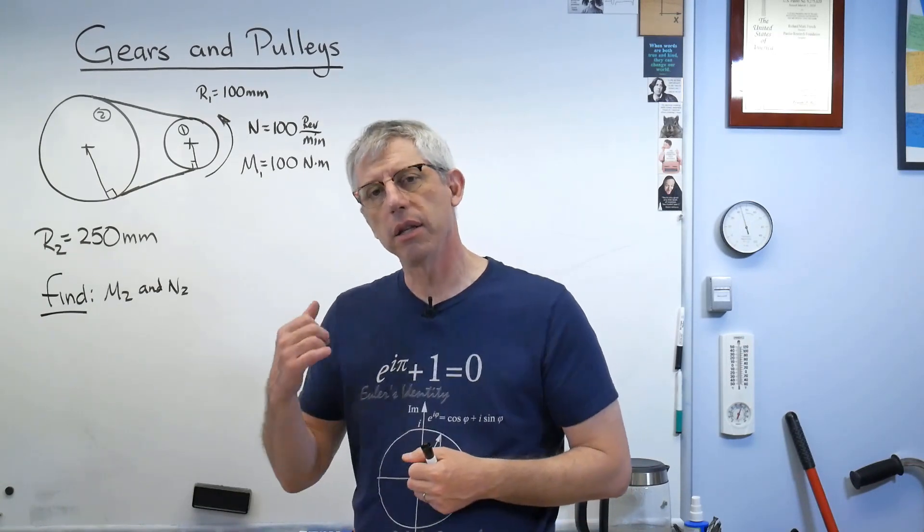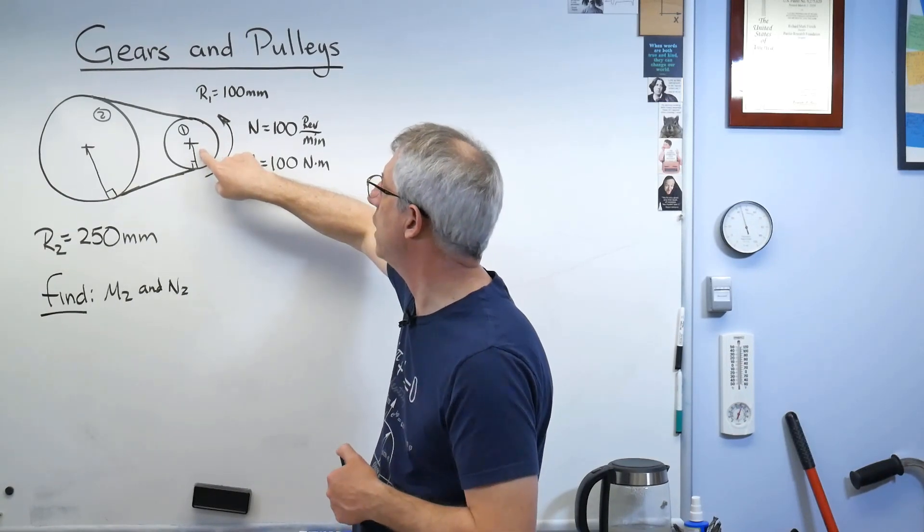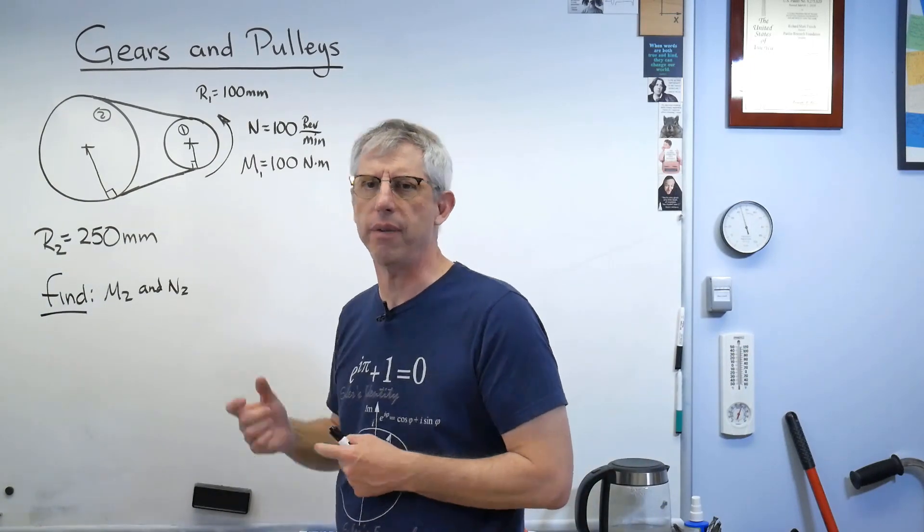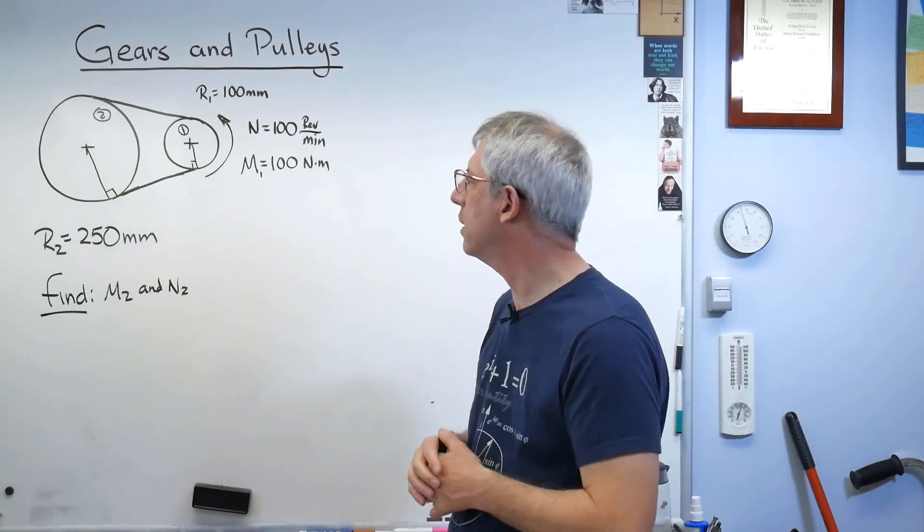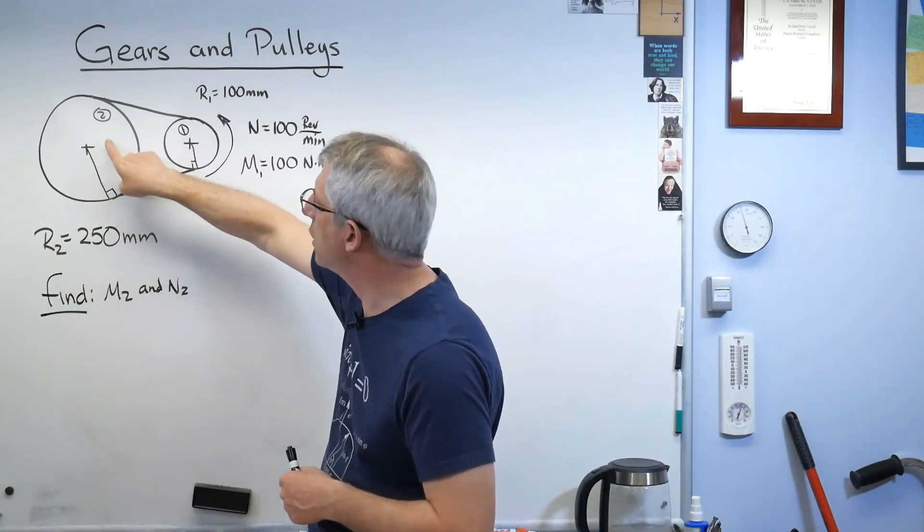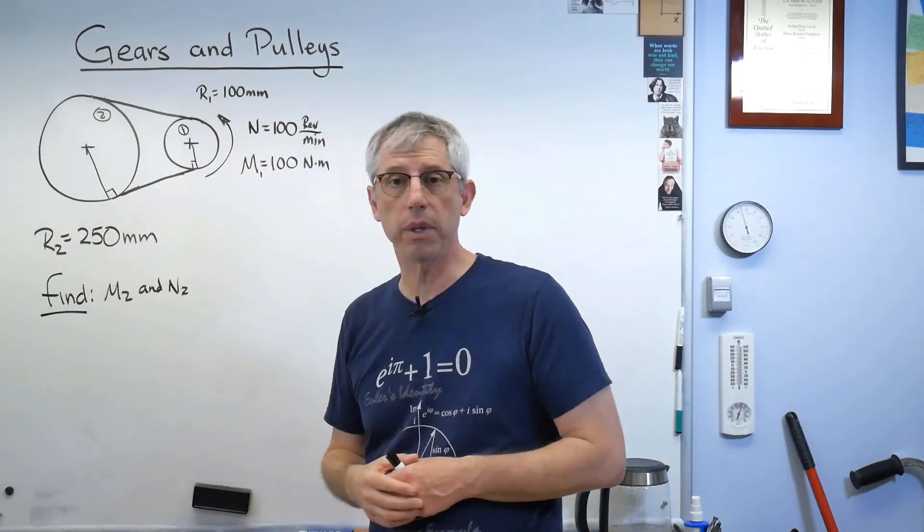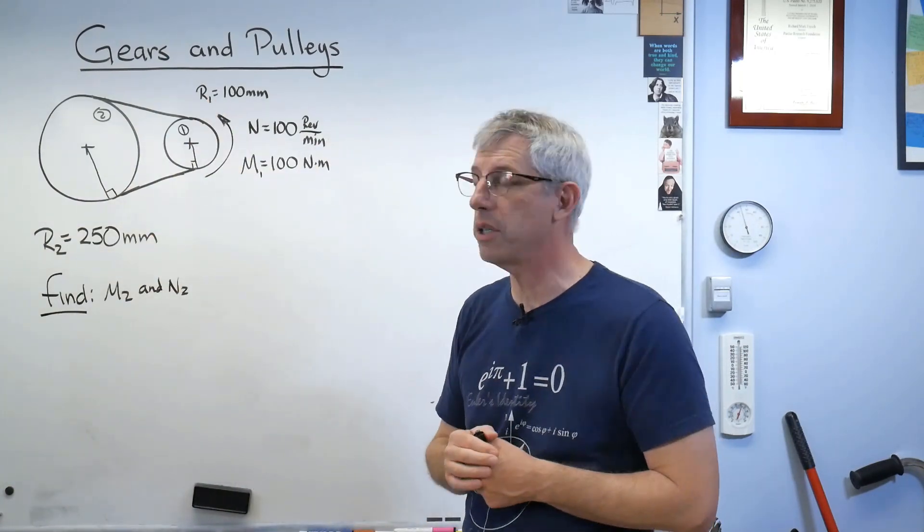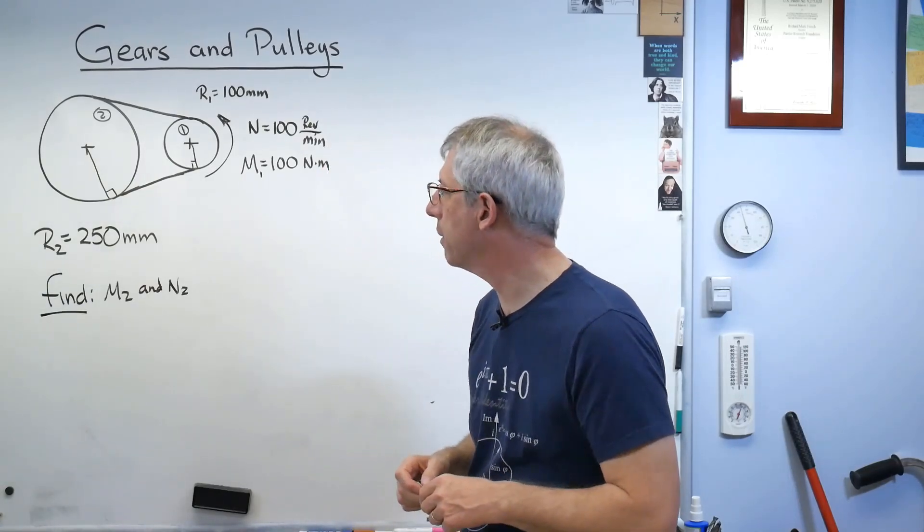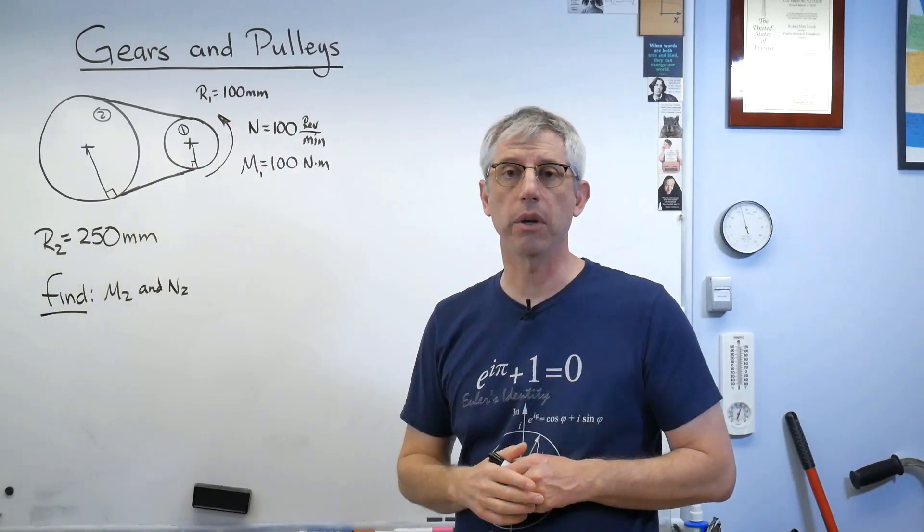So with that let's run a problem. So what I've got here is a very simple system. This little pulley is being driven. It's got a moment of 100 newton meters applied to it. Well what's driving it? Oh who knows? A motor, engine, a whole bunch of people pedaling, who knows? Something like that. And it's in turn driving this larger other pulley through this belt that we assume doesn't slip and it doesn't stretch. So there's no slipping and the belt is what we call inextensible. It doesn't stretch along its length.